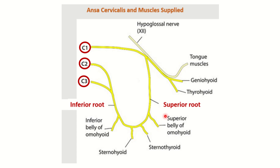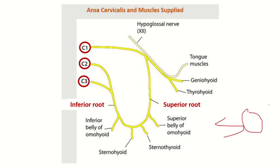The ansa cervicalis provides two roots: one is the superior root and the other is the inferior root. It supplies different types of muscles. There is a mnemonic to remember this group of muscles: SOS — S for sternothyroid, O for omohyoid, and S for sternohyoid. By this mnemonic, the supplied muscles are easy to remember.